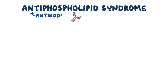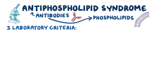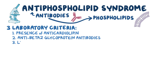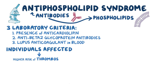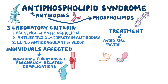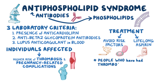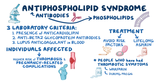As a quick recap: antiphospholipid syndrome is caused by antibodies which target the phospholipids in the cell membrane. The three laboratory criteria are presence of anticardiolipin, anti-beta-2-glycoprotein antibodies, or lupus anticoagulant in the blood. Individuals affected are at higher risk of thrombosis and pregnancy-related complications. Treatment involves avoiding other risk factors for thrombosis, as well as taking lifelong aspirin as prevention. People that have had thrombotic symptoms should also take warfarin, and during pregnancy, warfarin must be replaced by low molecular weight heparin.